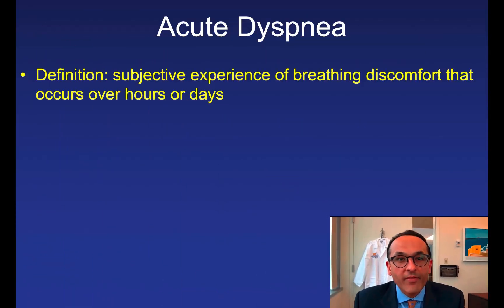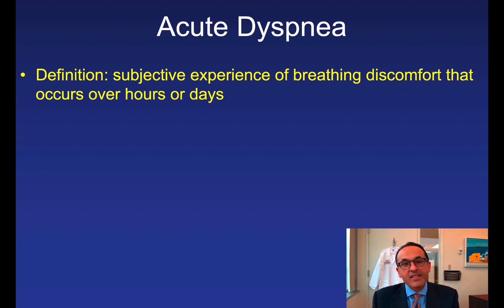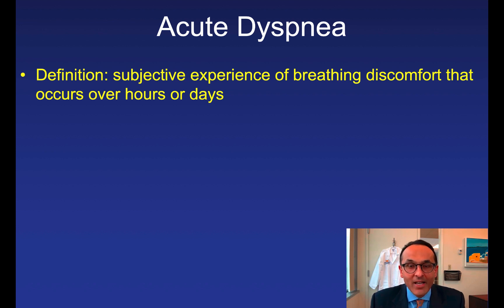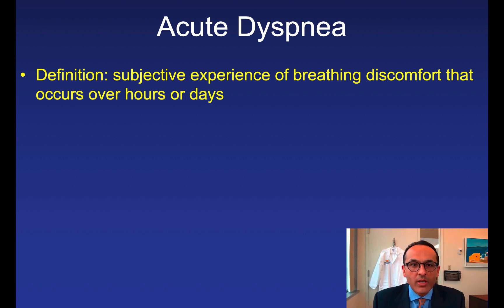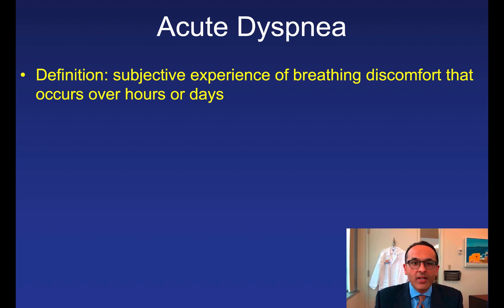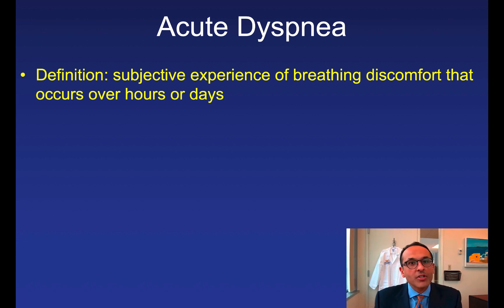We'll begin with the definition of acute dyspnea: the subjective experience of breathing discomfort that occurs over hours or days. The key aspects are the dyspnea part — the subjective sense of difficulty breathing — and the acute part. In clinical medicine we subdivide things into acute, subacute, and chronic based on the tempo of illness. Acute means hours or days, subacute over weeks, and chronic over several weeks, months, and years. The differential diagnosis differs based on that tempo.